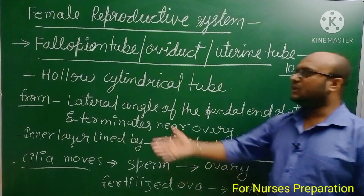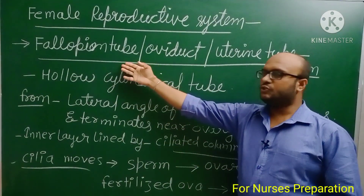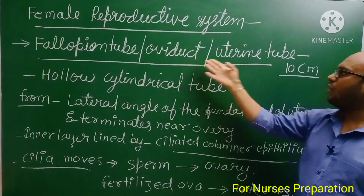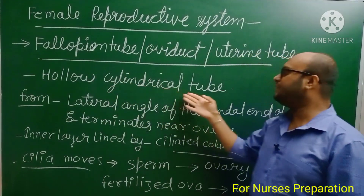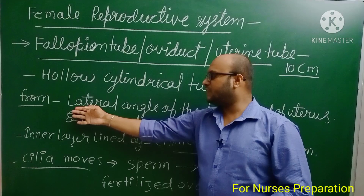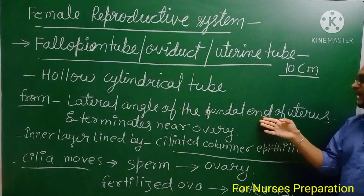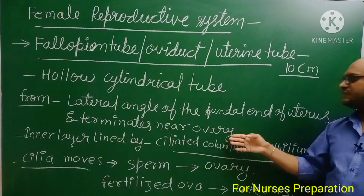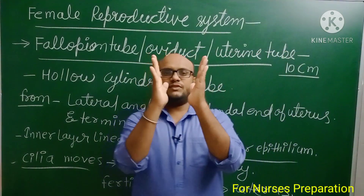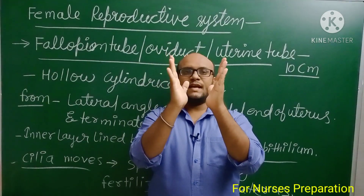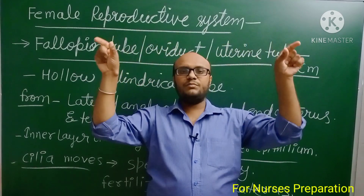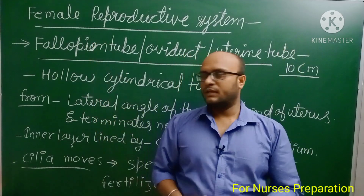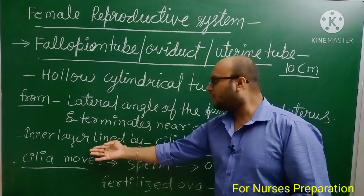First, let's discuss the fallopian tube. The fallopian tube is also known as the oviduct or uterine tubes. They have a length of approximately 10 centimeters. Fallopian tubes are hollow cylindrical tubes situated at the lateral angles of the fundal end of the uterus and terminate near the ovary.